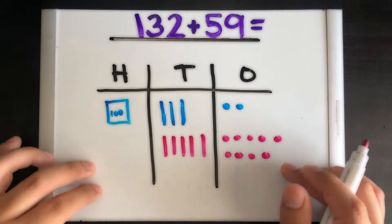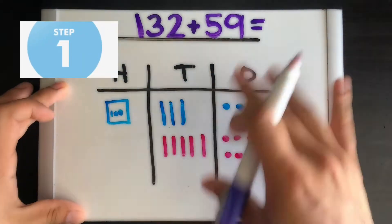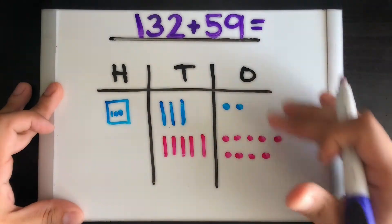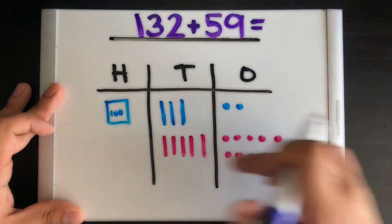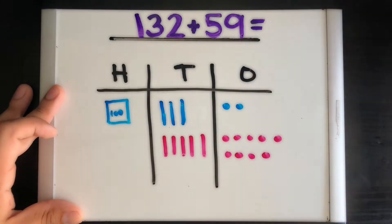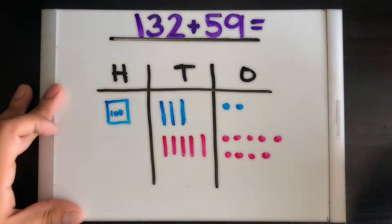All right, so we have just completed step two. So remember, step one was to build our HTO chart, step two we built out our numbers: 132 at the top, 59 at the bottom.